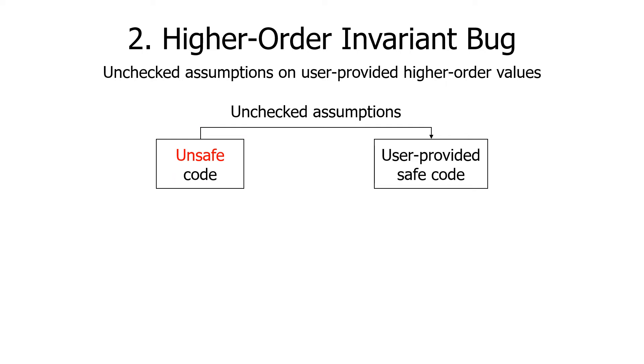The second bug type is higher-order invariant bug. It is caused by unchecked assumptions on user-provided higher-order values. Recall the access function explained earlier. Access is defined as a safe function, so it must check the index is in bounds before using unsafe code. This is a basic invariant check. Then, what does higher-order invariant mean?